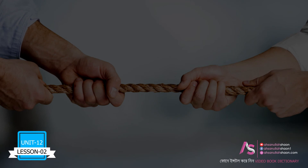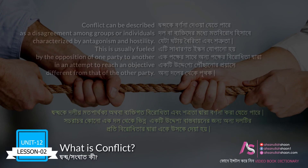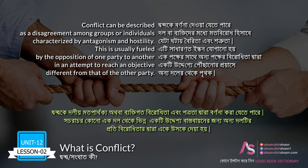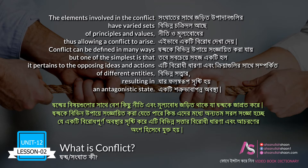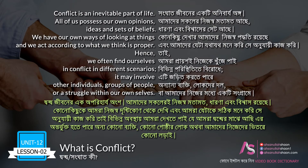Unit 12, Lesson 2: What is conflict? Conflict can be described as a disagreement among groups or individuals characterized by antagonism and hostility. This is usually fueled by the opposition of one party to another in an attempt to reach an objective different from that of the other party. The elements involved in the conflict have varied sets of principles and values, thus allowing a conflict to arise. Conflict can be defined in many ways, but one of the simplest is that it pertains to the opposing ideas and actions of different entities, resulting in an antagonistic state.